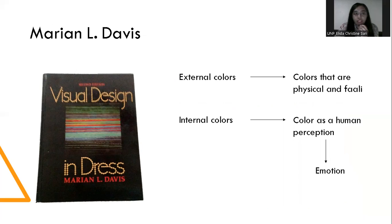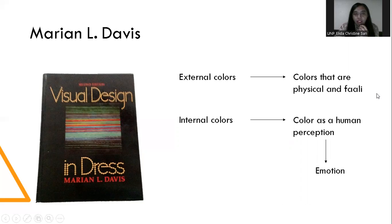What about Marian Aldavis? This book is about visual design and covers external colors and internal colors. External color is color that is physical and objective. Internal colors, on the other hand, are color as human perception — like emotion, such as feeling sad or very happy.